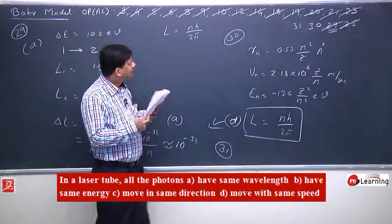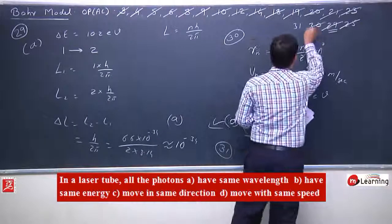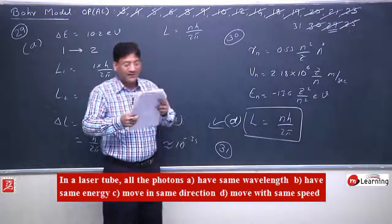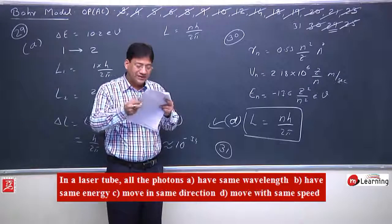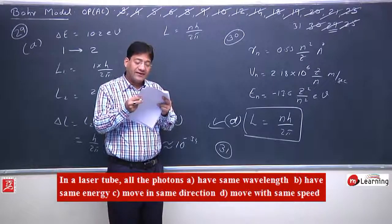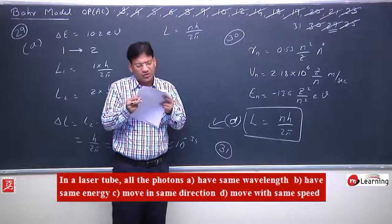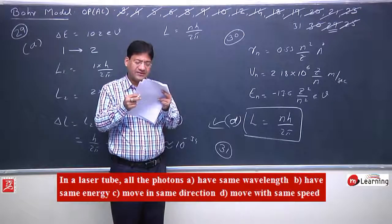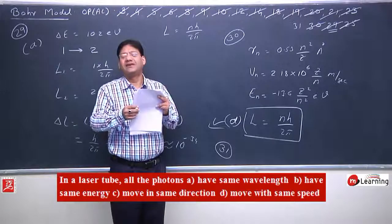Now the last objective of this set — the 31st objective. After this we will do multiple choice questions. 31st objective: In a laser tube, all the photons have the same wavelength, have the same energy, move in the same direction, and move with the same speed.